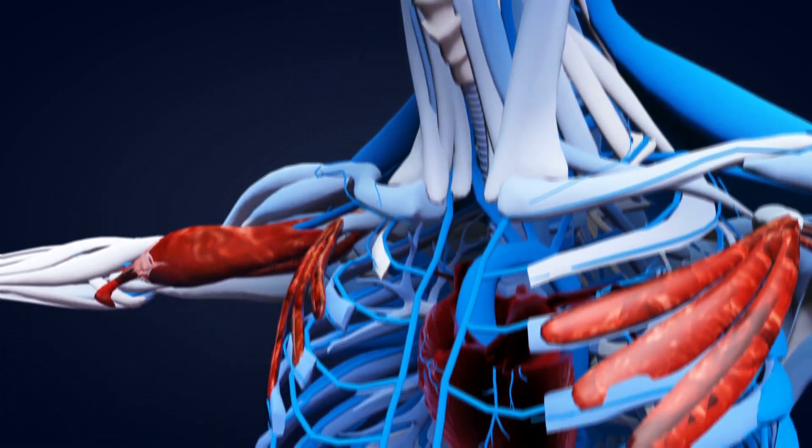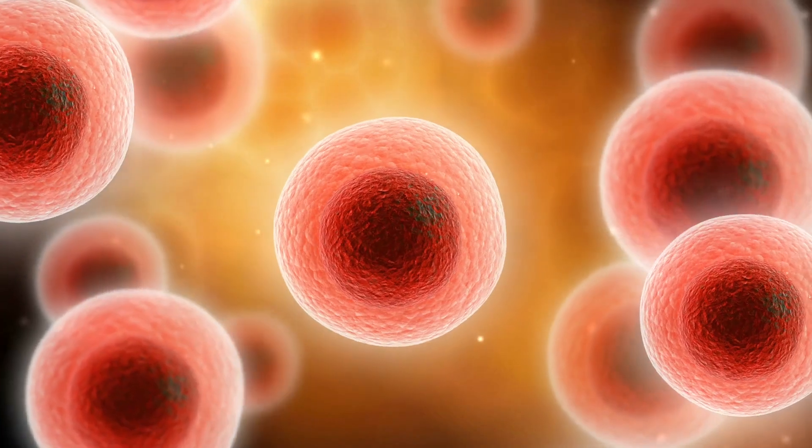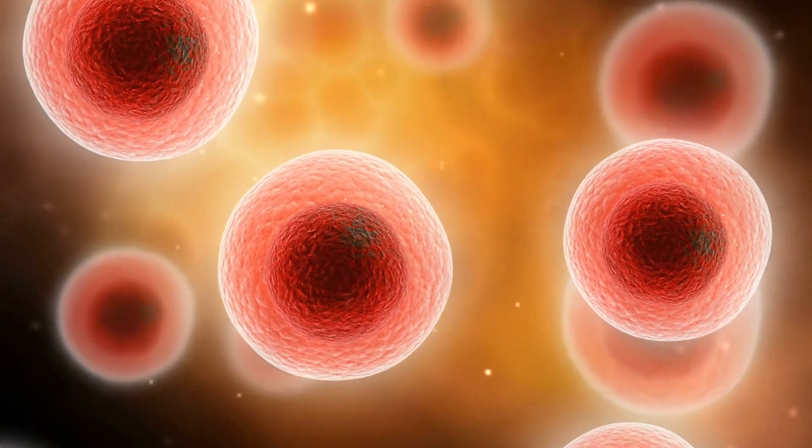This discussion will begin with a brief description of the organs and tissues associated with the immune system and then focus on the cells that provide innate and adaptive immunity.